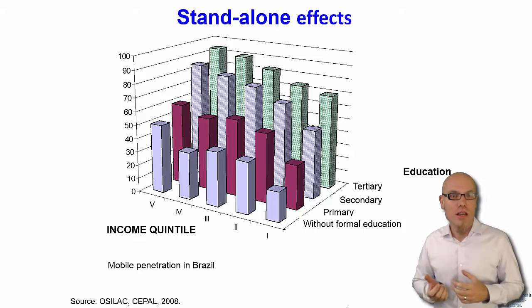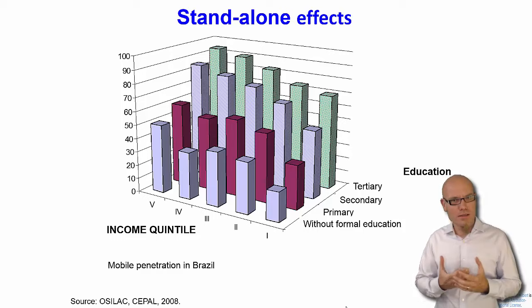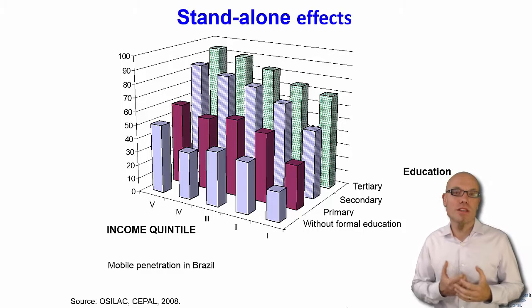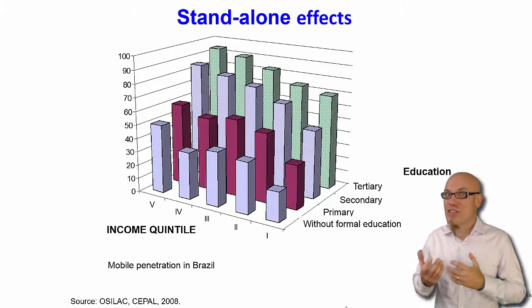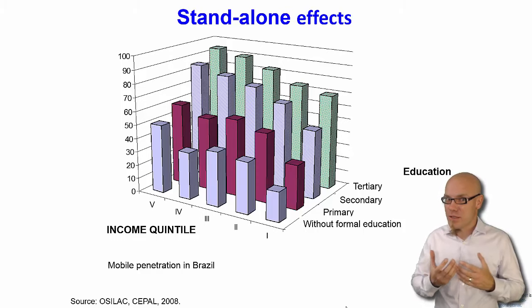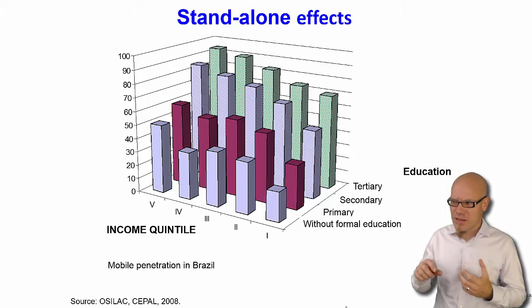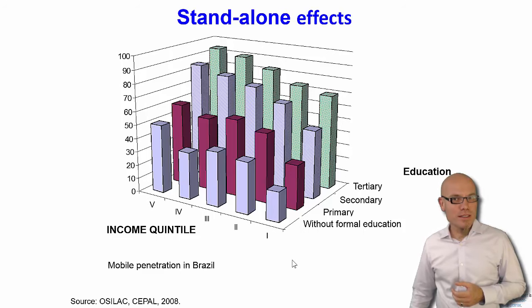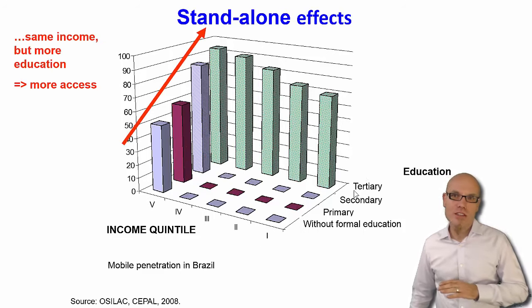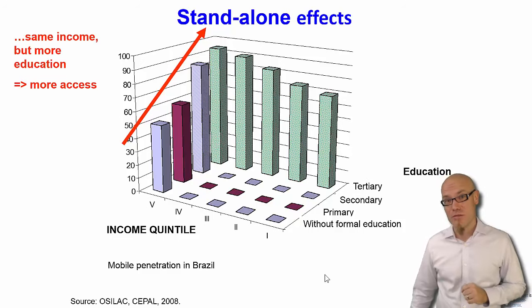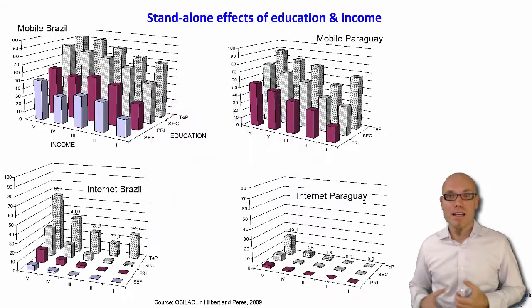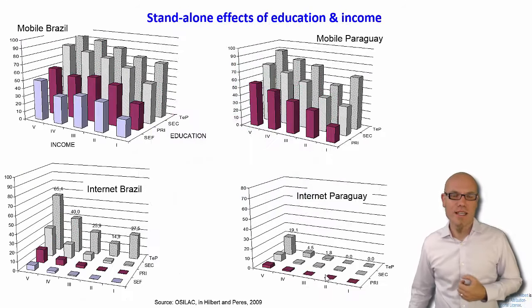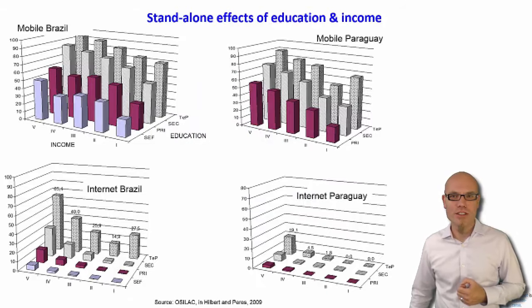Is it income or education that matters? Of course, these can be confounded by spurious correlation, because people with high income also tend to have high education. What you do is analyze them separately: among people with the same level of education, income still matters; and among people with the same income, education matters independently. You find these independent effects regularly when you study access to and usage of digital technology.